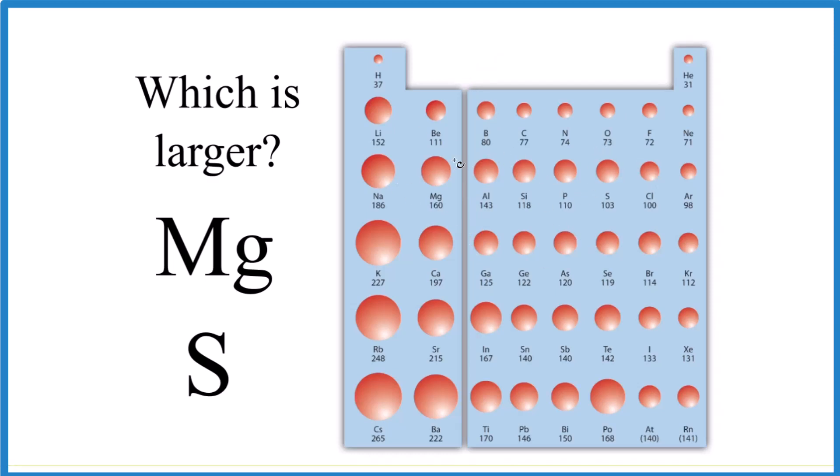So let's find magnesium. That's right here. And then sulfur. That's in the same period here on the periodic table. So the trend for atomic size when we're going across a period is that it decreases. It gets smaller as we go across a period there.